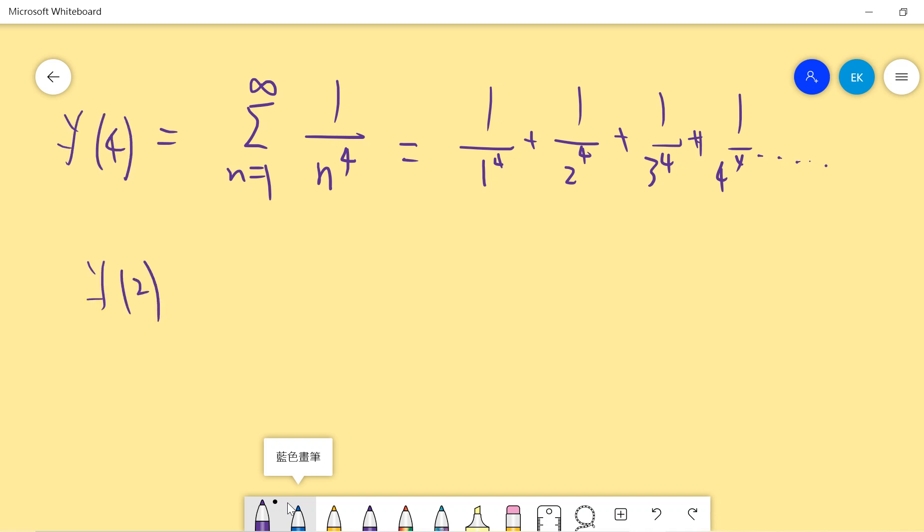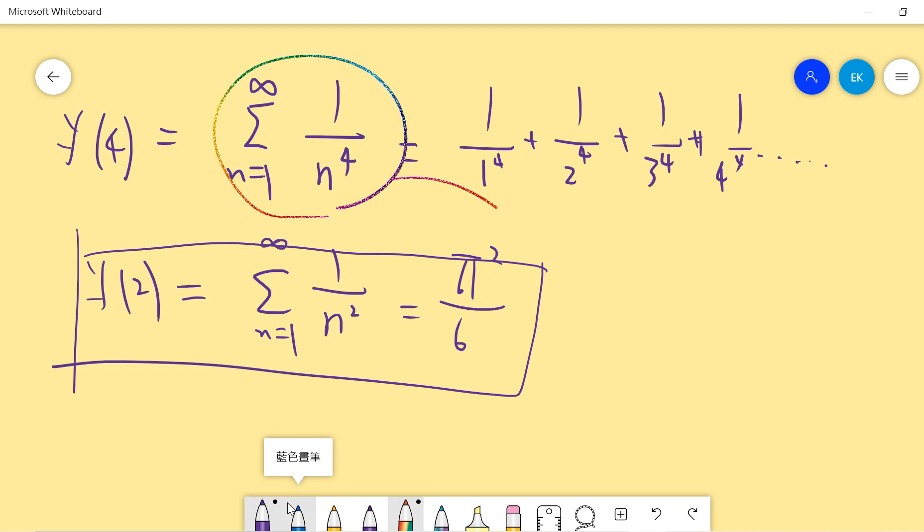The standard result for zeta 2 is the sum of 1 over n squared, which equals pi squared over 6. This is the standard result and I already gave you a proof for it. So today we want to compute this term. The result is pi to the 4th over 90.